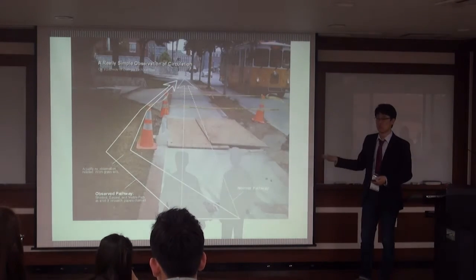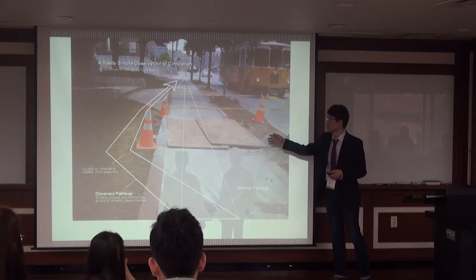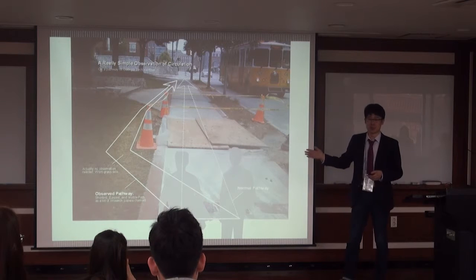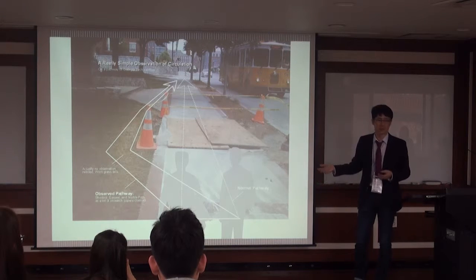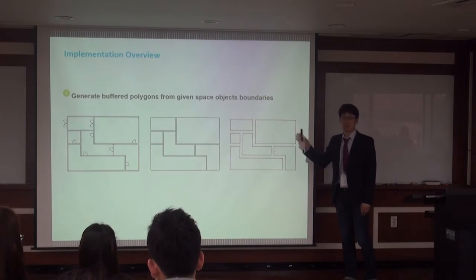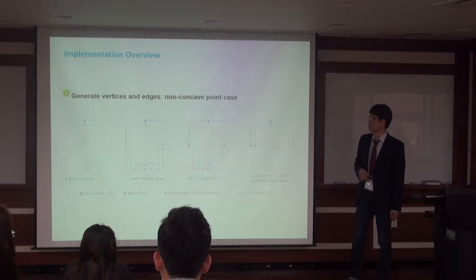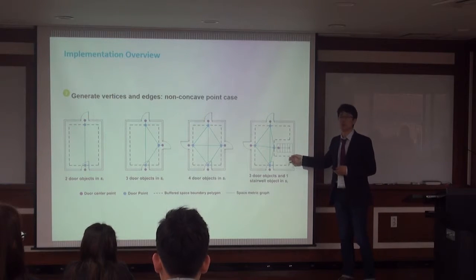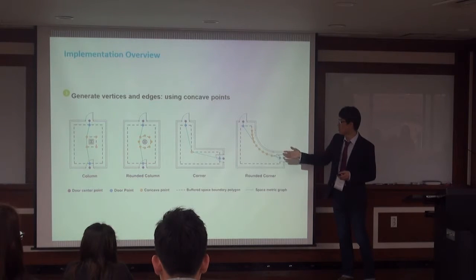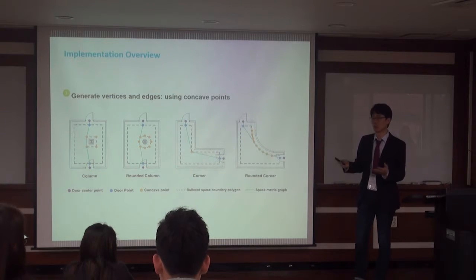Thanks to BIM, we can make this. The algorithm behind it is really simple. Because of some construction constraints, those two elements work that way — the most visible, most efficient, shortest path. Thanks to BIM, we have space objects. We can get a space boundary, make some buffer area to get this kind of geometry, and get some concave points and door points to connect them. If there are obstacles — columns, round corners, or angle corners — we can get any concave points in terms of geometry calculation based upon BIM.